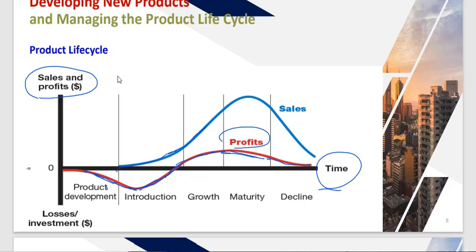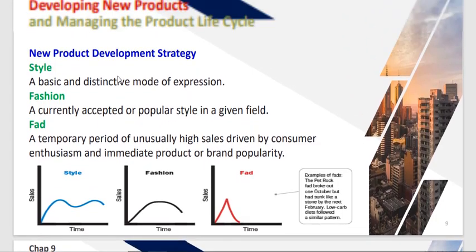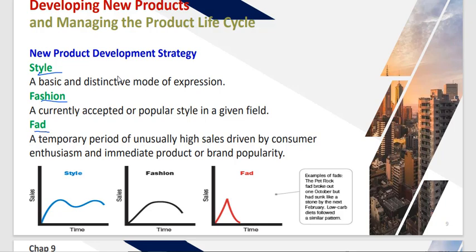In the product life cycle, we also look at three special concepts: style, fashion, and fad. Style is a basic and distinctive mode of expression. Fashion refers to a currently popular style within a given field.